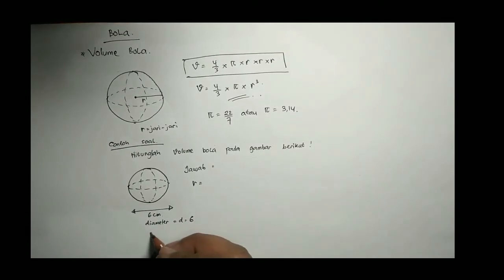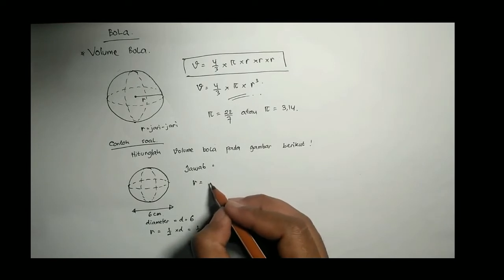Sedangkan yang kita tahu, jari-jari itu adalah setengah dari diameter ya. Jadi kalau diameternya 6 maka jari-jarinya adalah setengahnya 6 atau 3 gitu. Nah ini yang kita gunakan untuk menghitung volume gitu.